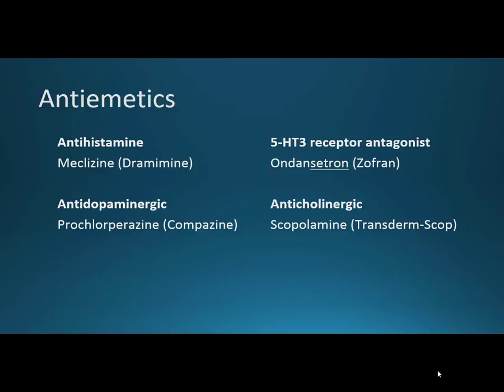We'll have four examples today in four different classes. Our example of an antihistamine is meclizine or Dramamine. Our antidopaminergic agent is prochlorperazine, otherwise known as Compazine. Our serotonin receptor antagonist is ondanzetron or Zofran. Our anticholinergic example is scopolamine or Transderm Scop.